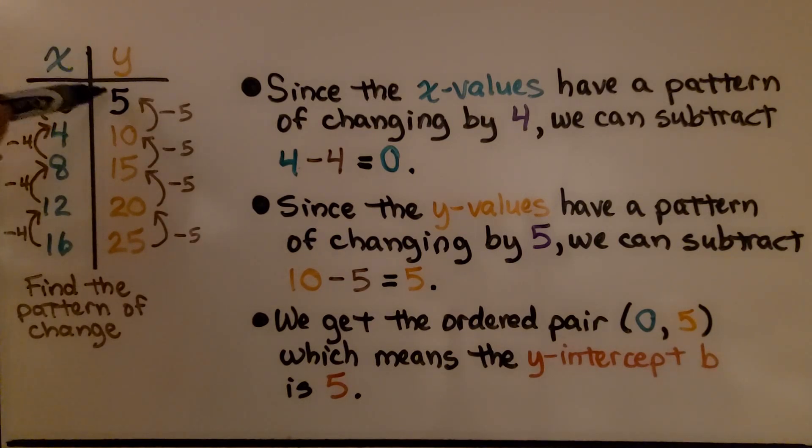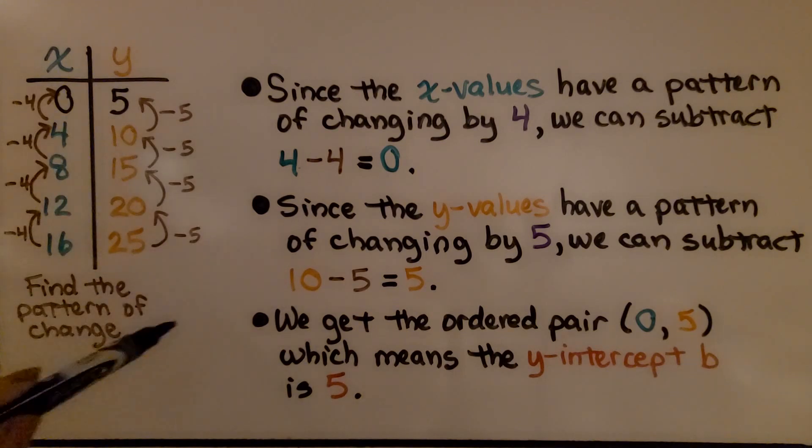That tells us the y-intercept is 5. Since the x values have a pattern of changing by 4, we can subtract 4 minus 4 to equal 0. Since the y values have a pattern of changing by 5, we can subtract 10 minus 5 to get 5. We get the ordered pair (0, 5), which means the y-intercept b is 5.